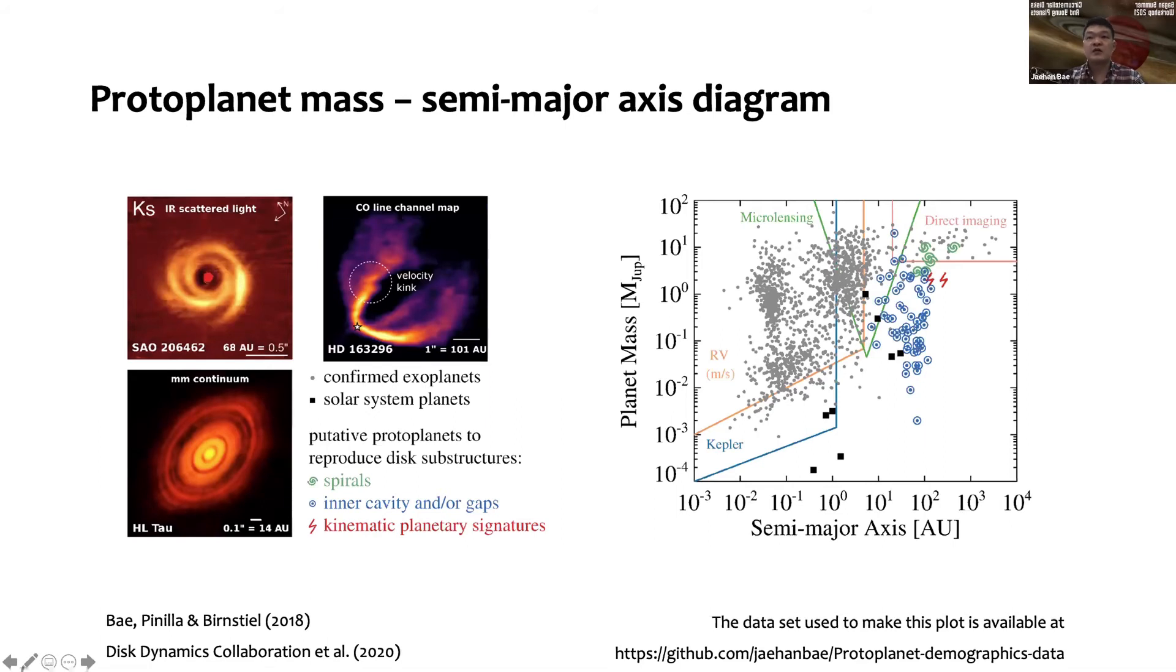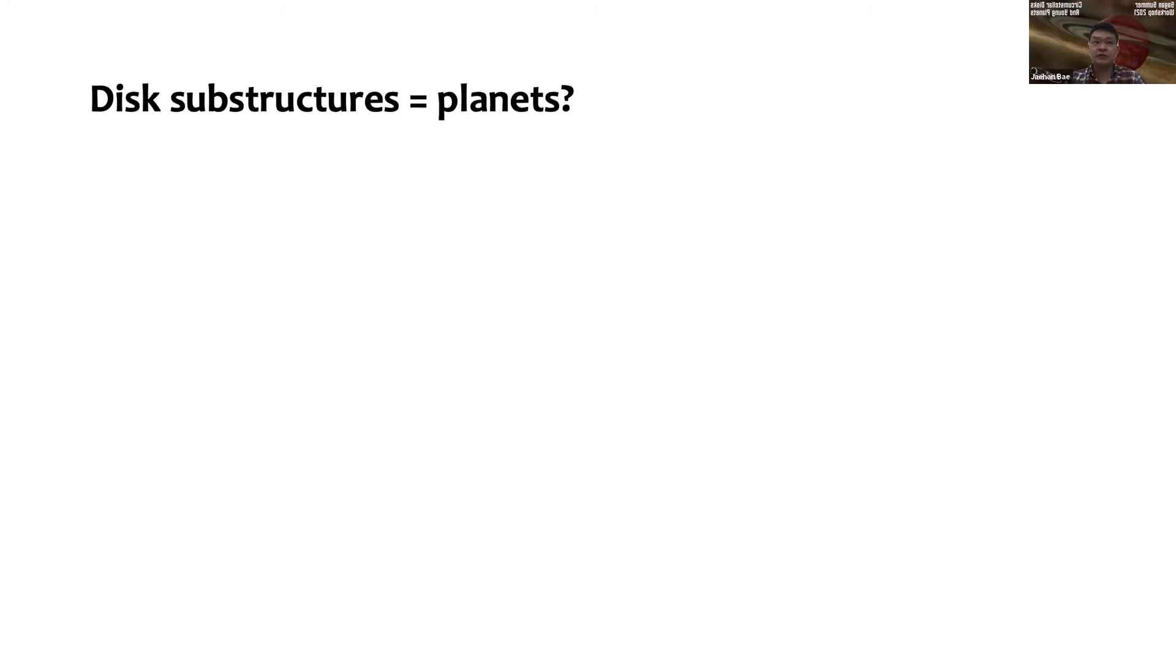Now I collected data from forward modeling of planet-disk interaction simulations, mostly where people try to reproduce these observations. You see rings and gaps, spirals—you try to put a planet to reproduce these observations, and you need to assume certain mass at a certain location. These data are collected, and you can see that it seems like there's a great population beyond 10 AU, beyond about 0.1 to 10 Jupiter masses. This is really interesting. It seems like there's a general population at least for the disks that we have been looking at in detail.